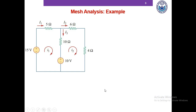Let's look at it with an example. In this circuit we have two meshes. After identifying the meshes, we assign mesh currents — clockwise current I1 in this mesh and clockwise current I2 in this mesh. You may see some currents already defined in the question such as I1, I2, I3. We'll just ignore those and assign our own mesh current variables.